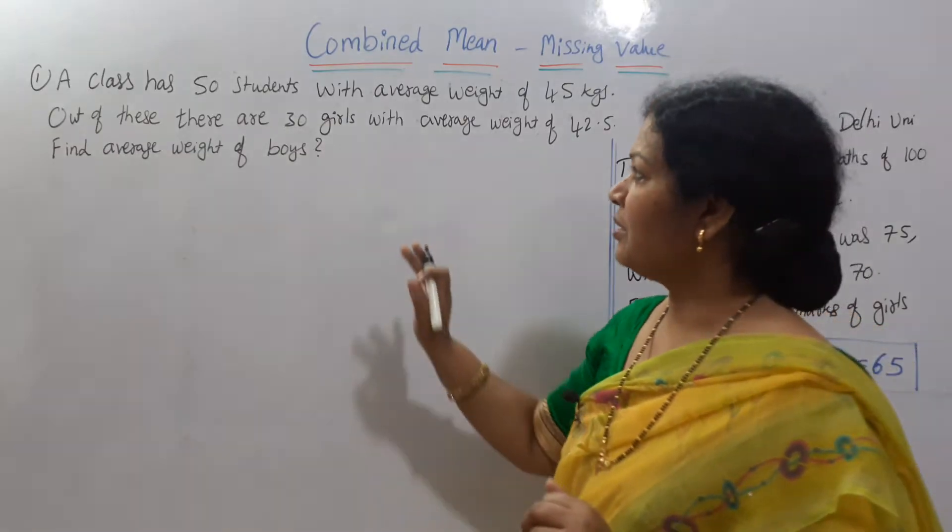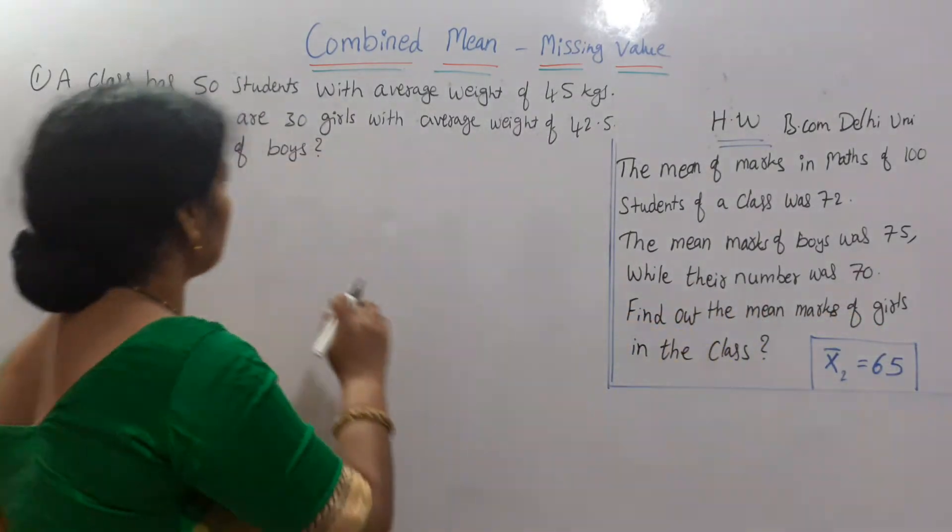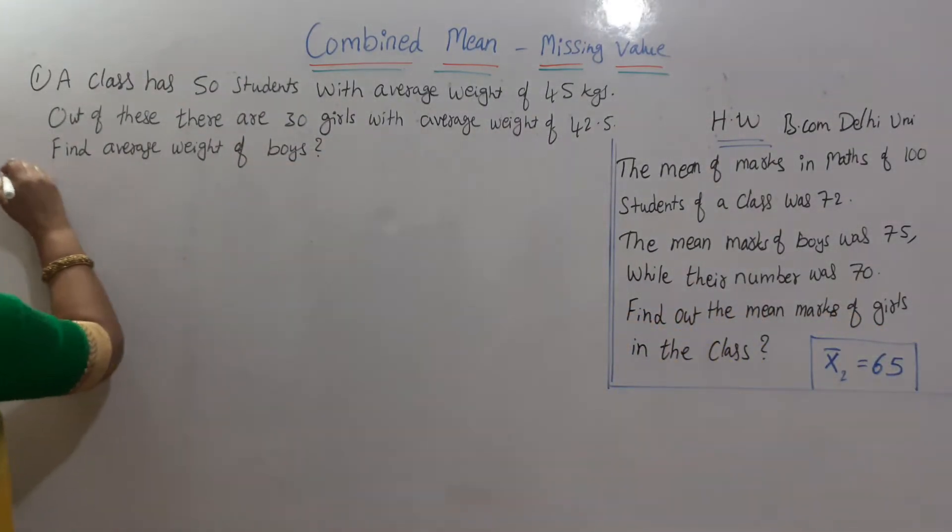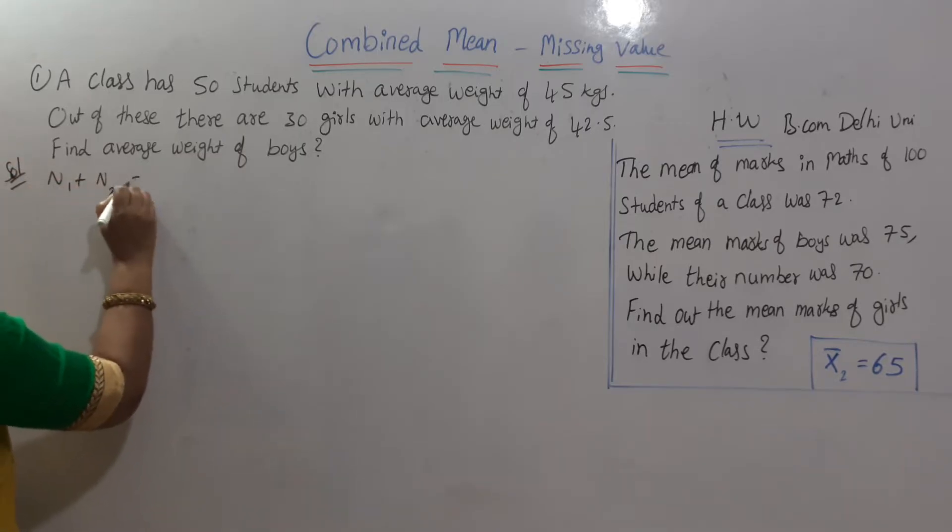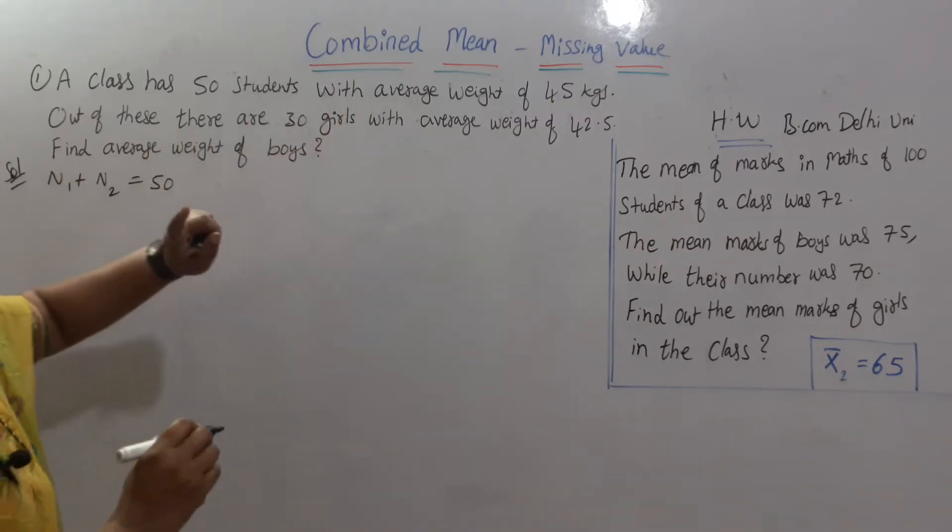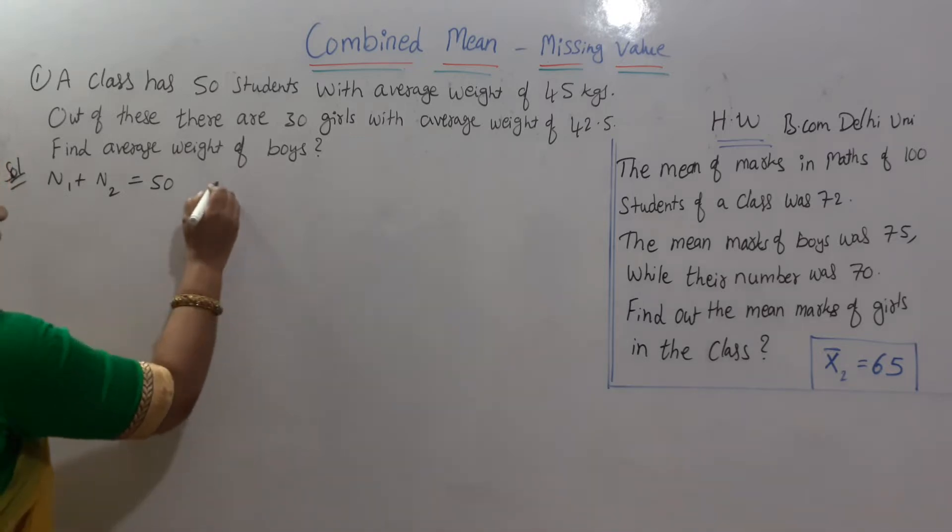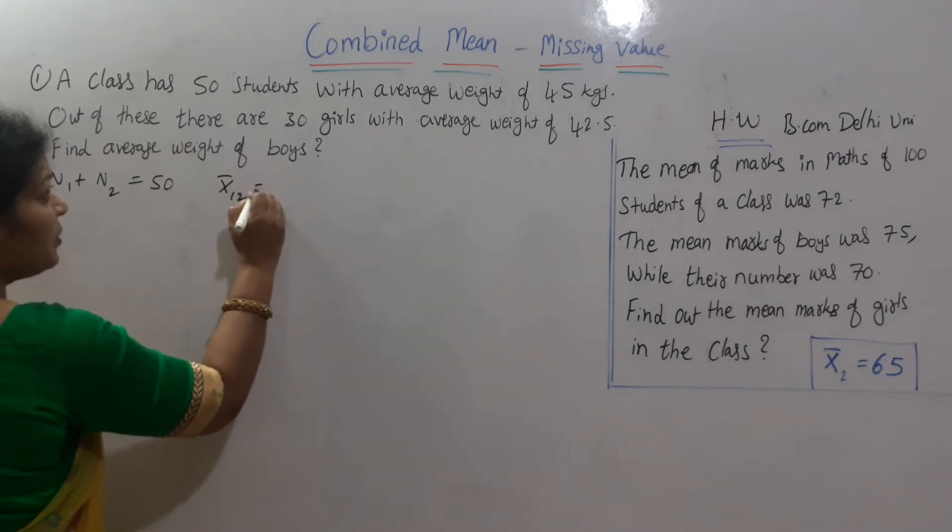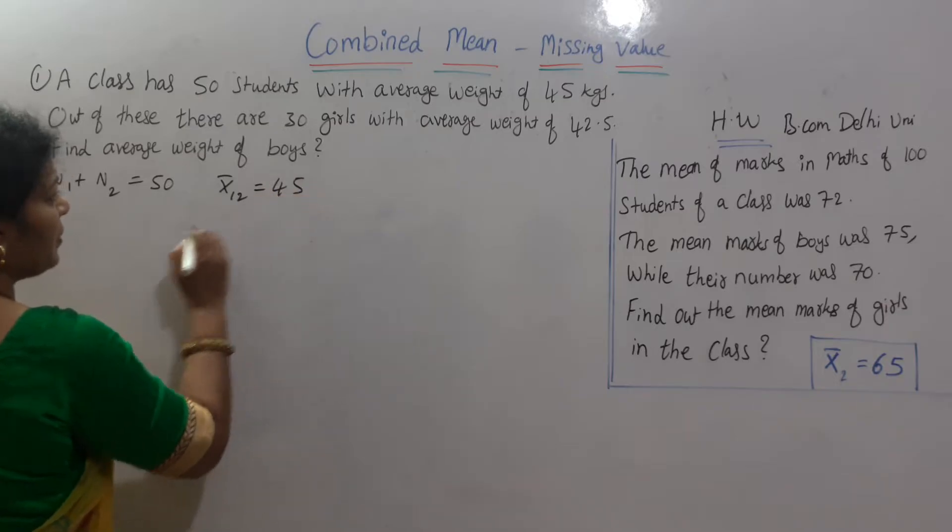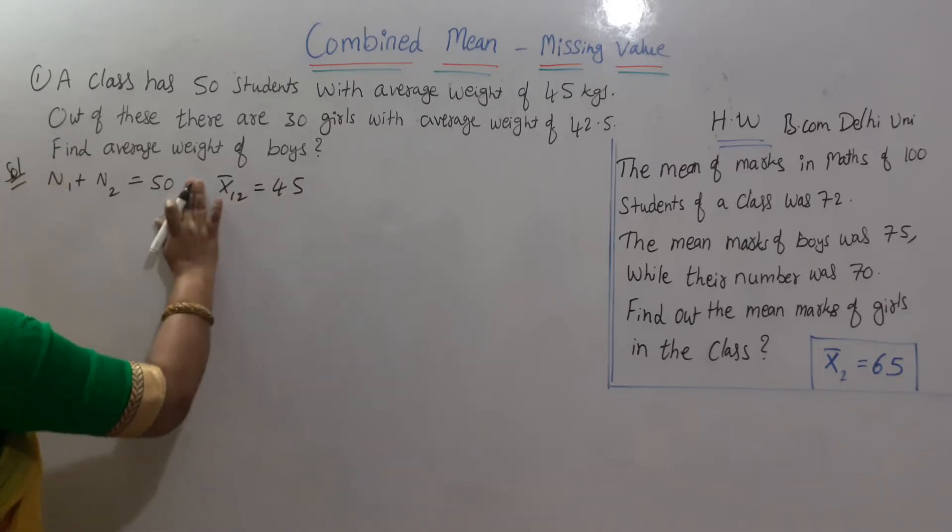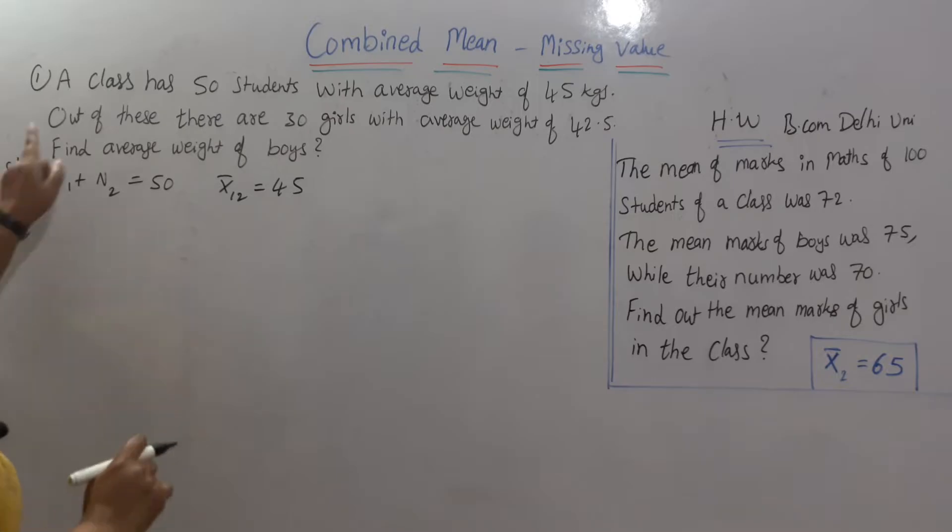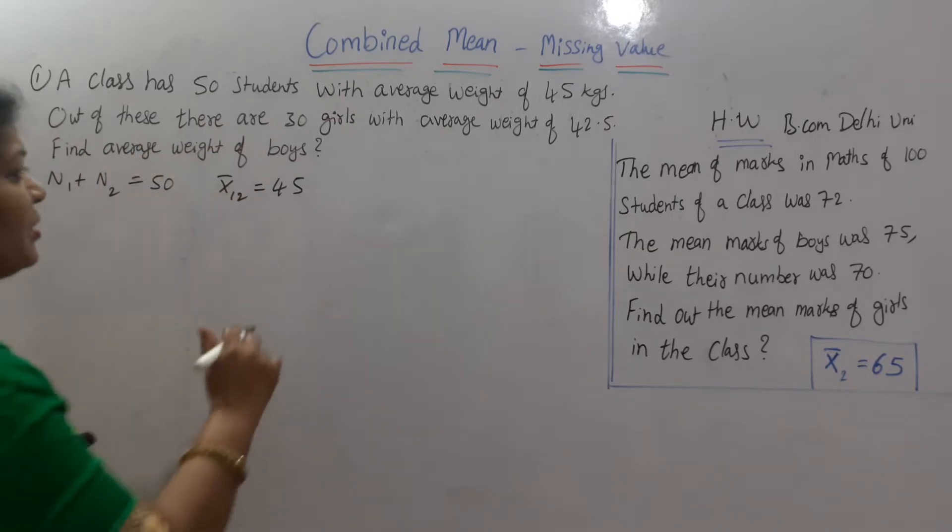A class has 50 students. Means N1 plus N2. Entire class, so N1 plus N2 is here 50. Solution, N1 plus N2 is here 50, total students. With average weight of 45. Total students average weight, that means X bar 1,2 is given to us 45. Next, after that, out of these, there are 30 girls. 30 girls means N1 is 30.